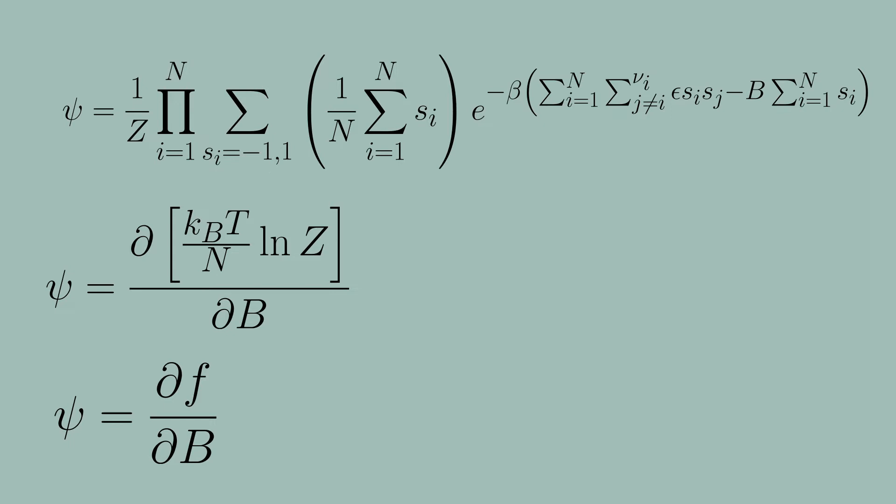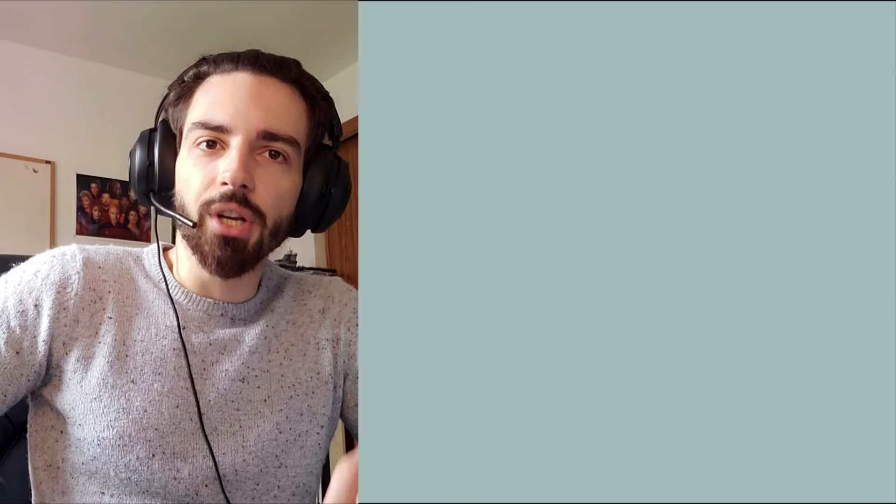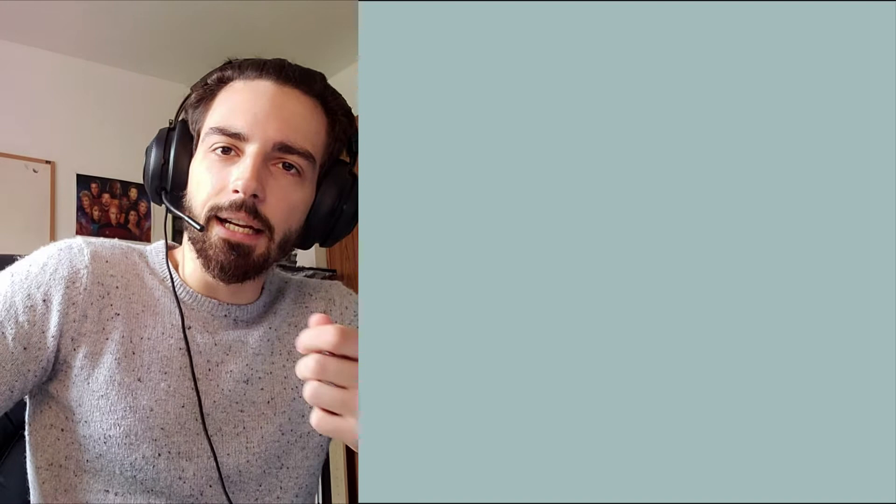When the spins do not interact, the model represents paramagnetism, in which case there is the well-known result that ψ is the hyperbolic tangent of B divided by k_B T. So at this point, let's connect all this discussion and this Ising model back to Landau theory.